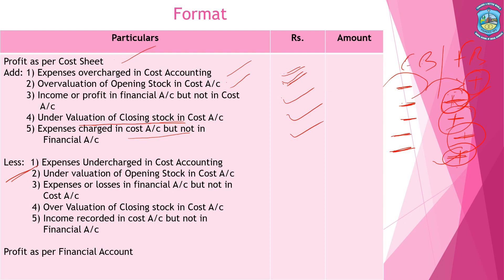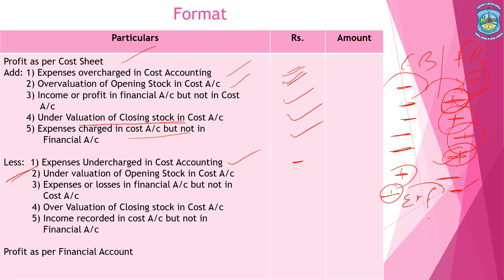Now the items to deduct. Expenses undercharged in cost accounting: if expenses are undercharged, the profit of the cost book will increase, while the profit of the financial book will be decreasing, so we deduct this item. Undervaluation of opening stock: opening stock is treated as expenditure, and since expenses always decrease profit, the profit of the financial book is decreasing, so we deduct undervaluation of opening stock.